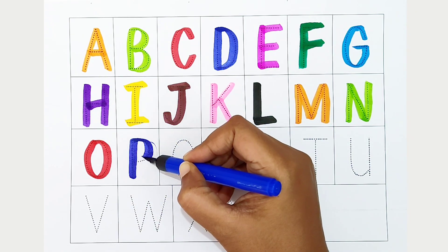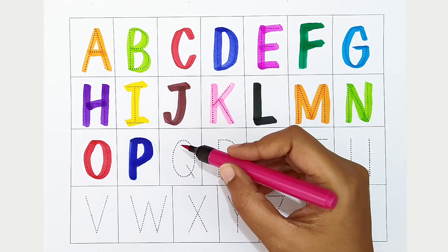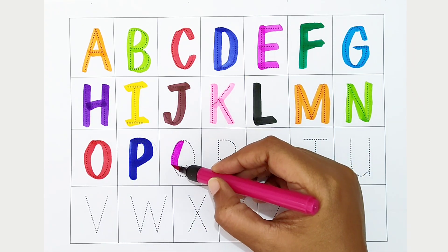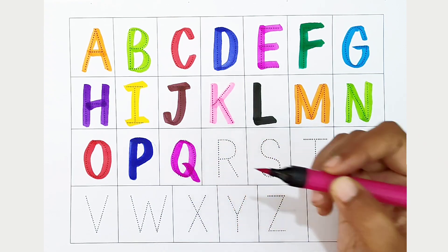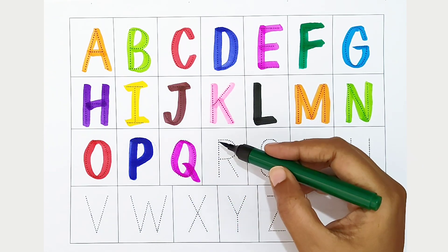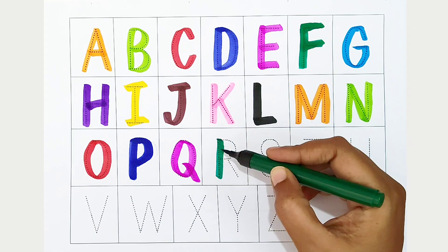P, dark blue color. P is for penguin. Q, dark pink color. Q is for queen. R, dark green color. R is for rabbit.